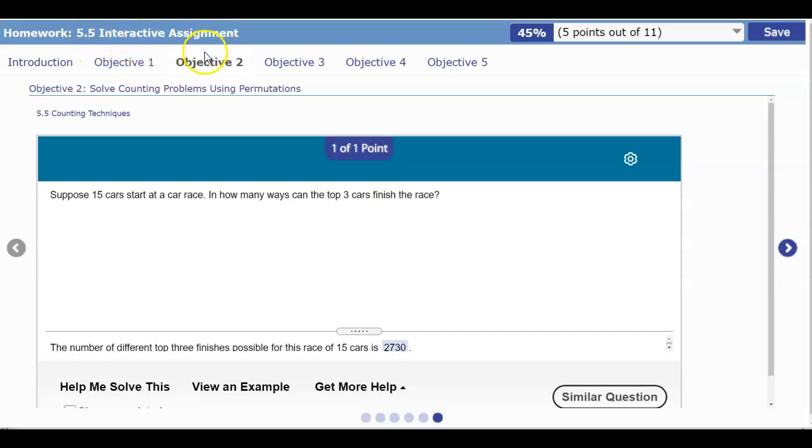Section 5.5 Interactive Assignment, Objective 2. Suppose 15 cars start at a car race. In how many ways can the top 3 cars finish the race?